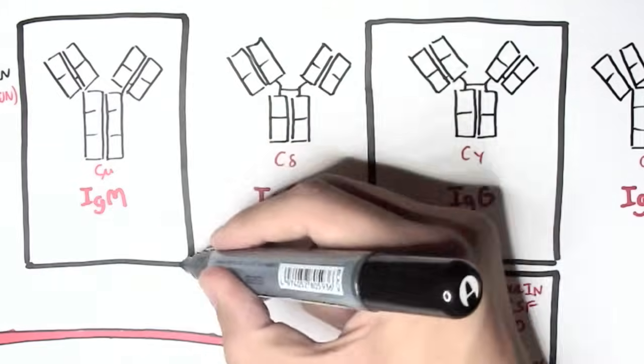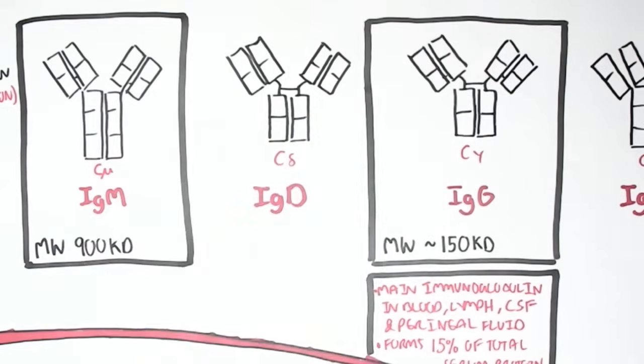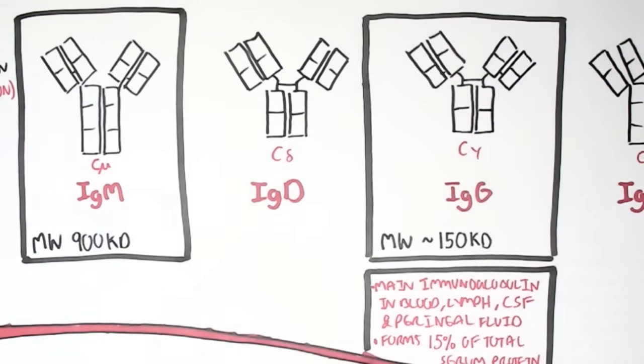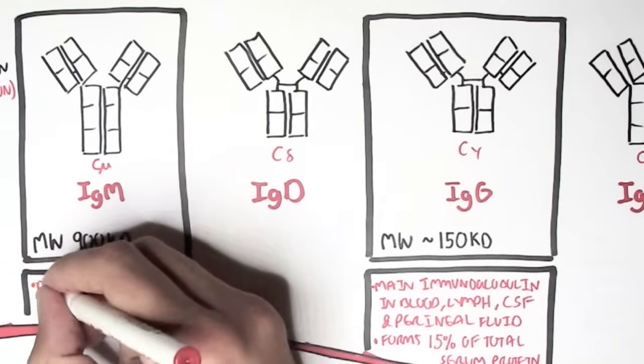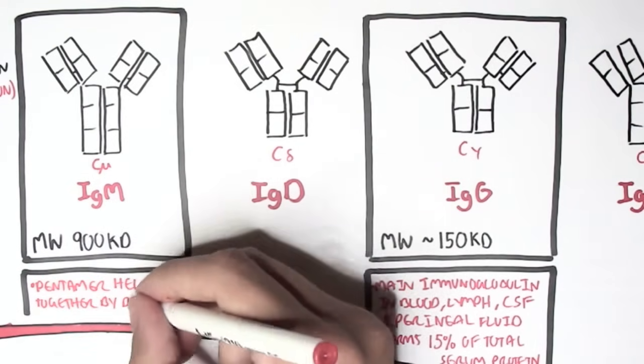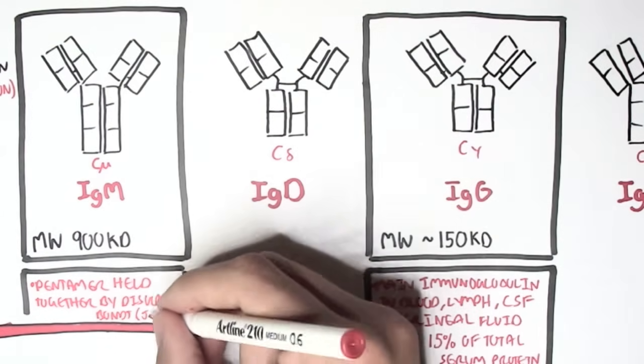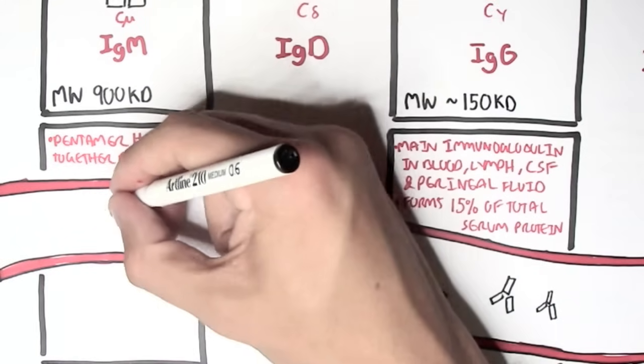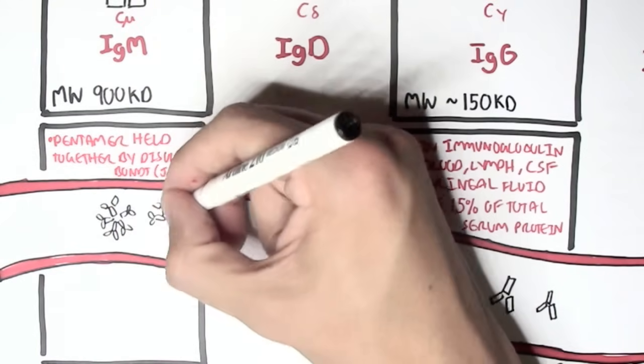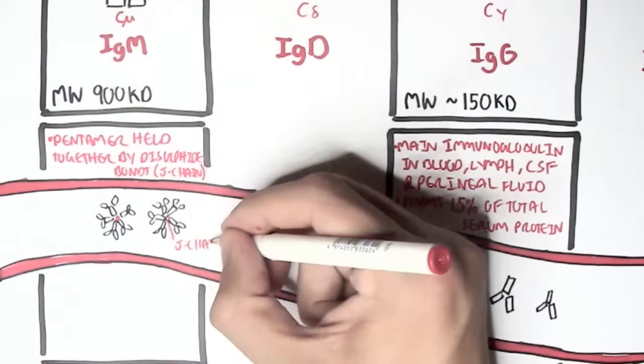So IgM has a molecular weight of 900 kilodaltons, which is massive. It actually forms a pentameric structure in the bloodstream once it's secreted. And it's held together by disulfide bonds, officially called the J-chain. So here we have the pentameric structure of IgM held together by the J-chain.